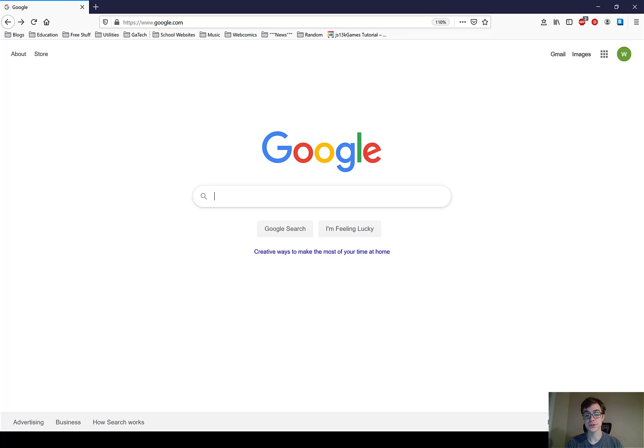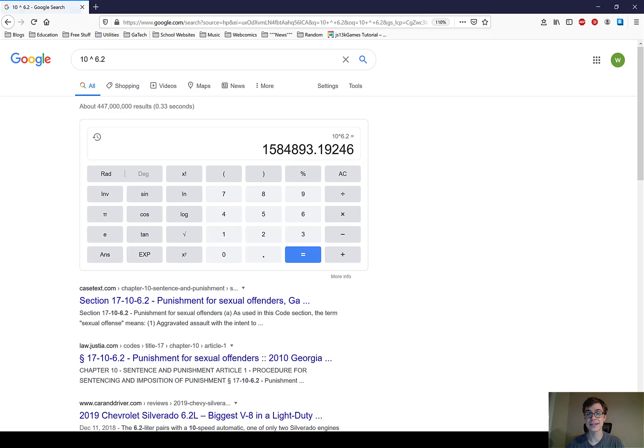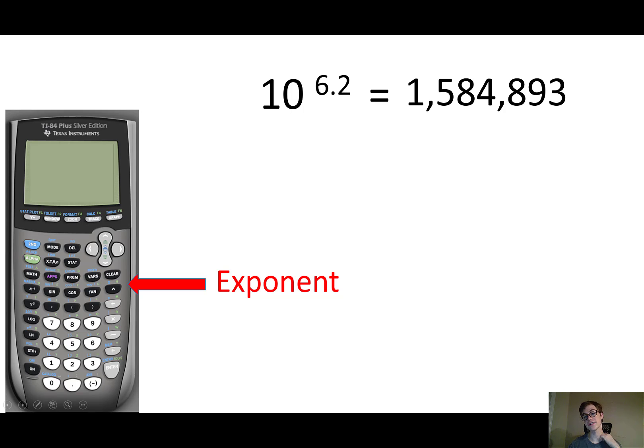Google will do these calculations for you. So if I wanted to know 10 to the power of 6.2, I could just put that into Google, and I would get the answer. This number is the answer. So 10 to the 6.2 power is about 1,500,000.